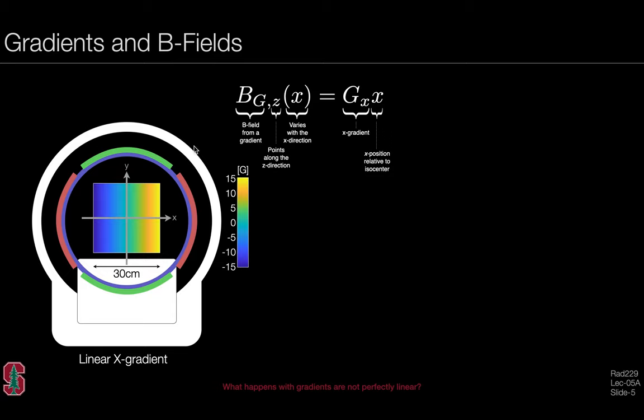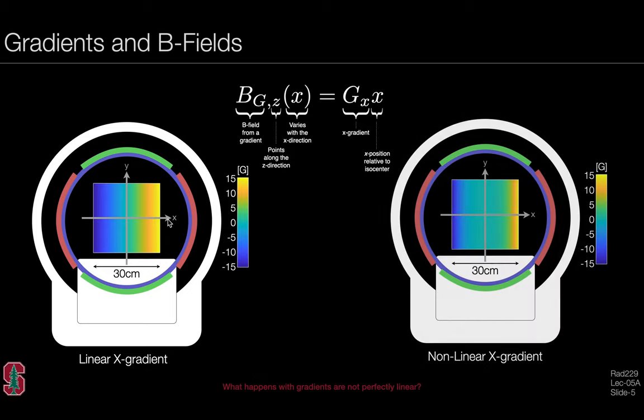In the case of a linear x gradient, we might expect the B field generated from the gradient to decrease on the left-hand side and increase on the right-hand side in a linear fashion. Now, in the presence of nonlinear gradients, the spatial distribution of B field will be a nonlinear function of space, and this will create several problems, especially for image encoding.